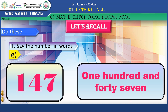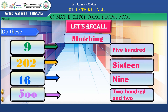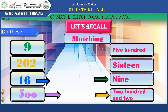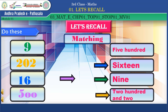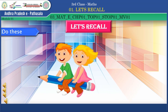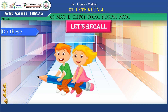Children, you are super! Now match the following: nine — nine; twenty-nine in words — twenty-nine; two hundred and two — two hundred and two; sixteen — sixteen; five hundred — five hundred. Well done, children! Clap yourself — super! Our second activity is also over.